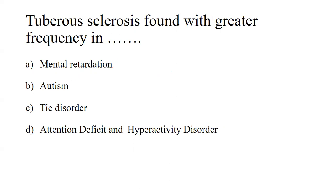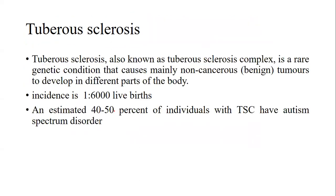Next question: tuberous sclerosis found with greater frequency. The options are mental retardation, autism, tic disorder, and ADHD — that is attention deficit and hyperactivity disorder. We should know what tuberous sclerosis is. Tuberous sclerosis is otherwise known as tuberous sclerosis complex; it is a very rare genetic condition.